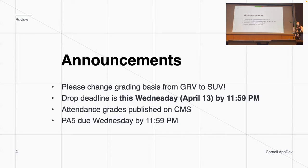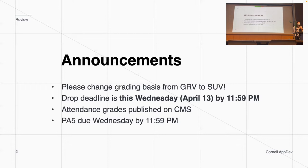Your attendance rate should be published on CMS, so feel free to look at that when you have a chance. Attendance is only 5%, so don't worry too much about it. Also, K5 is due this Wednesday at 11:59pm, and the late deadline just started. Does anyone have any questions about announcements?